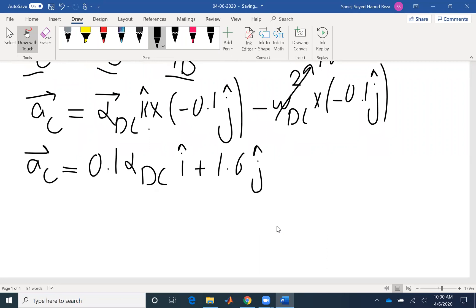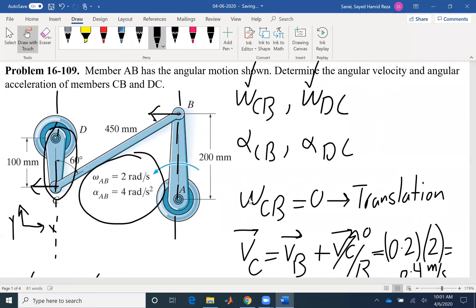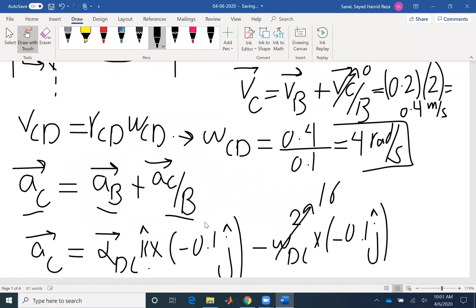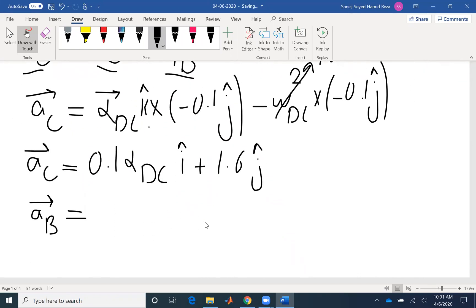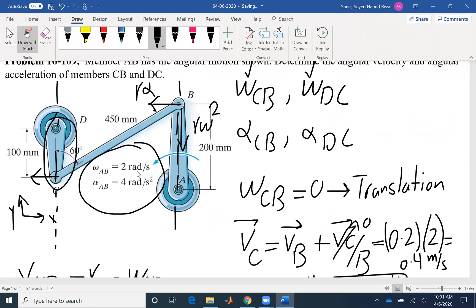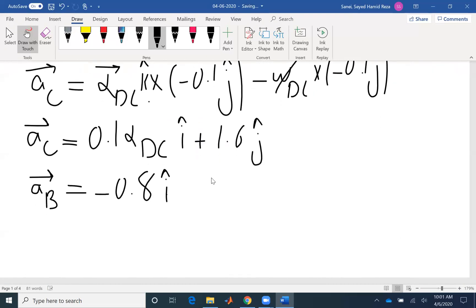Now I need to write AB. AC has two components, AB will have two components as well. I can either use the vector formulation or look at the problem. R alpha will be the tangential component of acceleration and R omega squared would be the normal component of acceleration. Both of them have negative components towards negative x and negative y. So R alpha, R is 0.2, alpha is 4, so 0.2 times 4 would be 0.8, negative 0.8 i. Also R omega squared, R is 0.2, omega is 2, so that would be 0.8, negative 0.8 j. So I found AB.